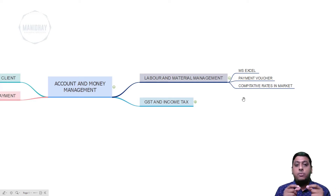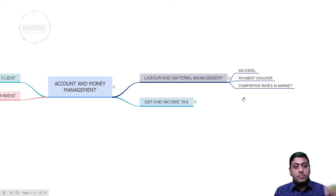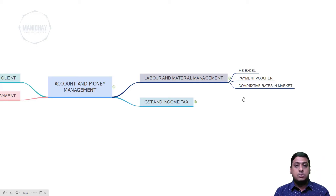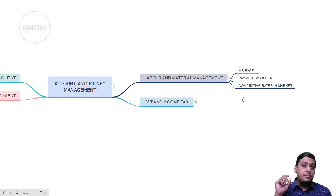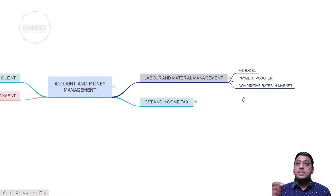Next, payment voucher. A voucher is a form wherein you make the person sign for the payment you have made. In most civil engineering projects, payment is done in cash because the client gives you cash. If they give a check, you sign the check and give it to the labor or material supplier. If you are paying in cash, you maintain a payment voucher where the person taking the cash signs, and you write their name, the amount in words, and the purpose of the payment.